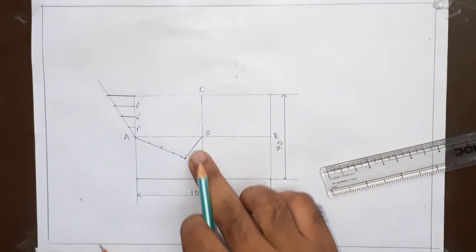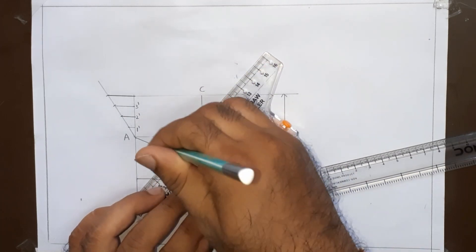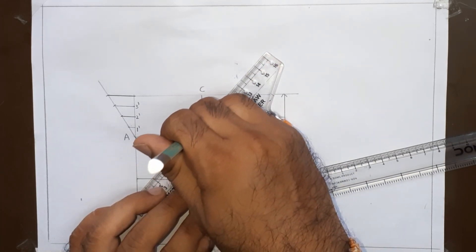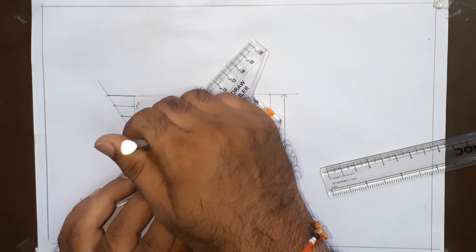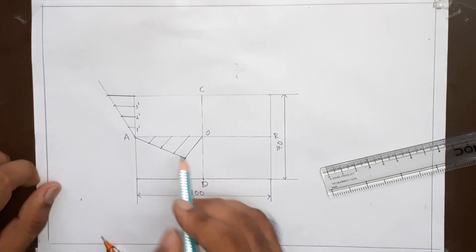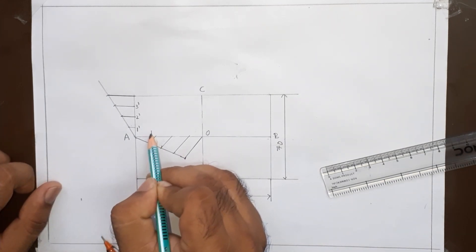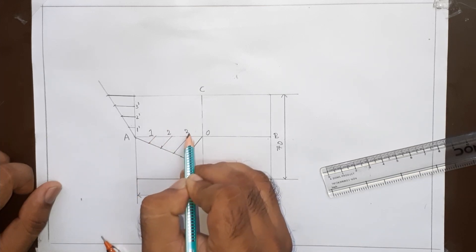Next we will join this point with this plane. Then set the drafter at this point and join this line, next this line, then this line. Now we have divided this successfully. Let this point be equal to 1, this is 2, this is 3.